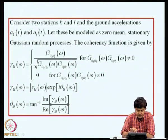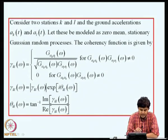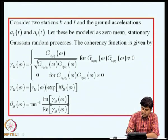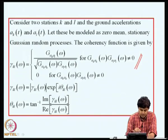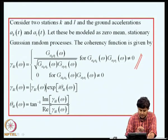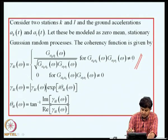Consider two stations K and L with ground accelerations A_k(t) and A_l(t). We model these two random processes as having zero mean, stationary Gaussian random processes. The coherency function is given by the ratio of the cross PSD G_{AkAl}(omega) divided by the square root of G_{AkAk}(omega) times G_{AlAl}(omega), when the denominator is not equal to zero, and is zero when the denominator is zero.